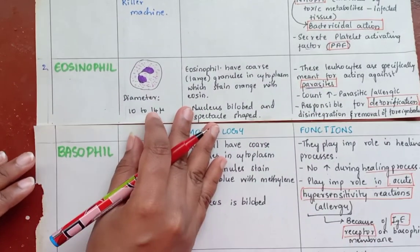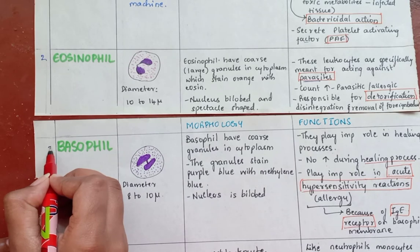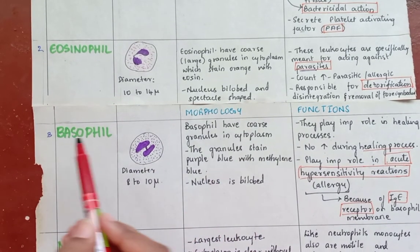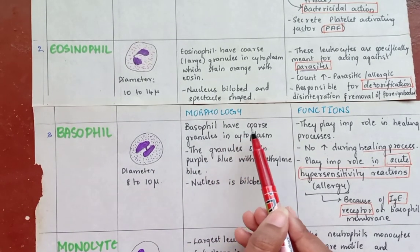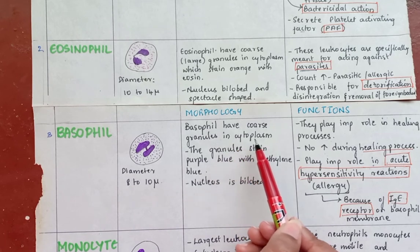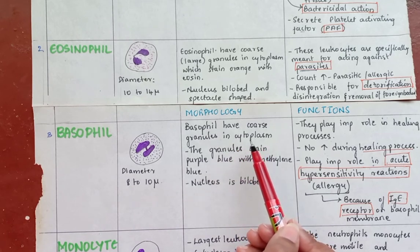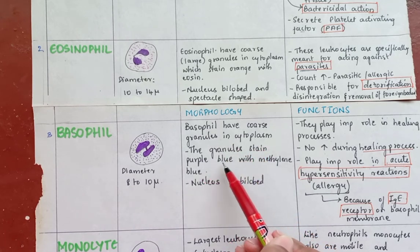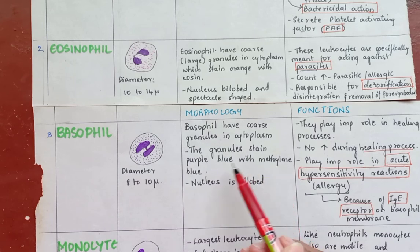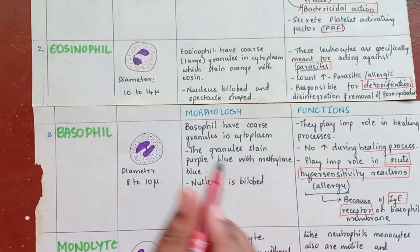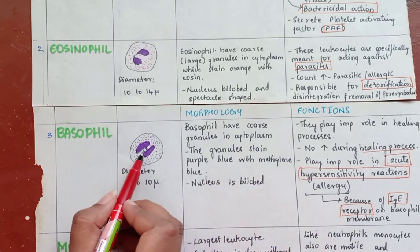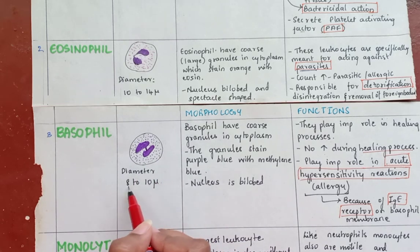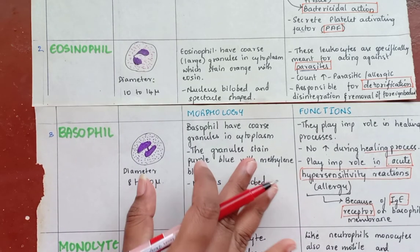The third leukocyte is basophil. Basophils have coarse granules in the cytoplasm, and these granules stain purple-blue with methylene blue. They have very coarse, large amounts of granules. The nucleus is bilobed and the diameter is 8 to 10 microns.